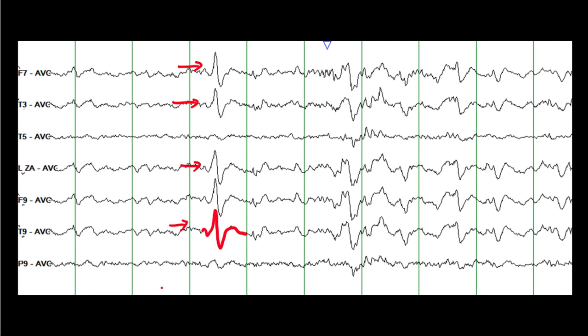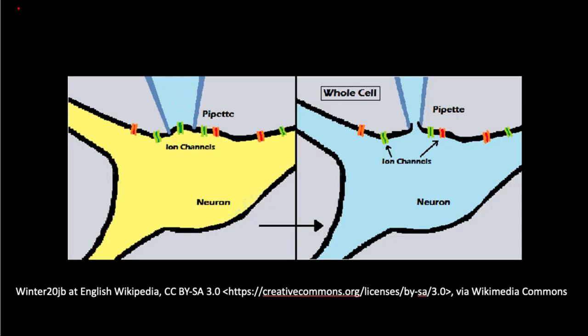Now imagine that you have a means of recording the potential inside one of these neurons — this is called a patch clamp. So you are recording the potential within the neuron. If you had an epileptic spike and simultaneously were recording from inside the neuron, what do you expect to see? What is the cellular counterpart of an epileptic spike?